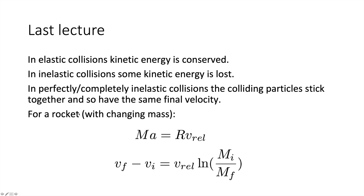We then looked at a rocket, which is another example of a collision but with a changing mass with time. We saw that the mass times the acceleration equals the rate of mass lost times the relative velocity of the fuel with respect to the rocket. The final minus initial velocity equals the relative velocity of the fuel times the logarithm of the initial mass divided by the final mass.